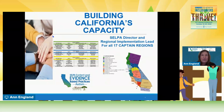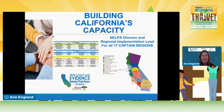As I mentioned, we have this grant, and we partnered with the SELPA directors and regional implementation leads for all 17 regions. With this grant money, we're able to pay some money to the SELPA and to a regional implementation lead who can oversee the work in those particular regions. This is a list of the CAPTAIN region, the SELPA taking the lead, and the regional implementation lead who is an expert in autism—this is who your leadership is for your particular region.